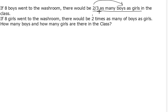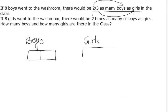So the resultant is two-thirds as many boys as girls, which means boys are going to be two units and girls are going to be three units.